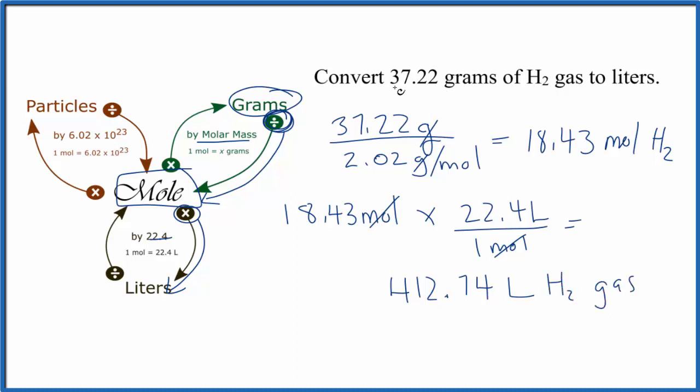To recap, we had grams of hydrogen gas, changed this to moles by dividing by the molar mass, then multiplied by 22.4 to get liters. This is Dr. B converting from grams of H2 to moles and then to liters. Thanks for watching.